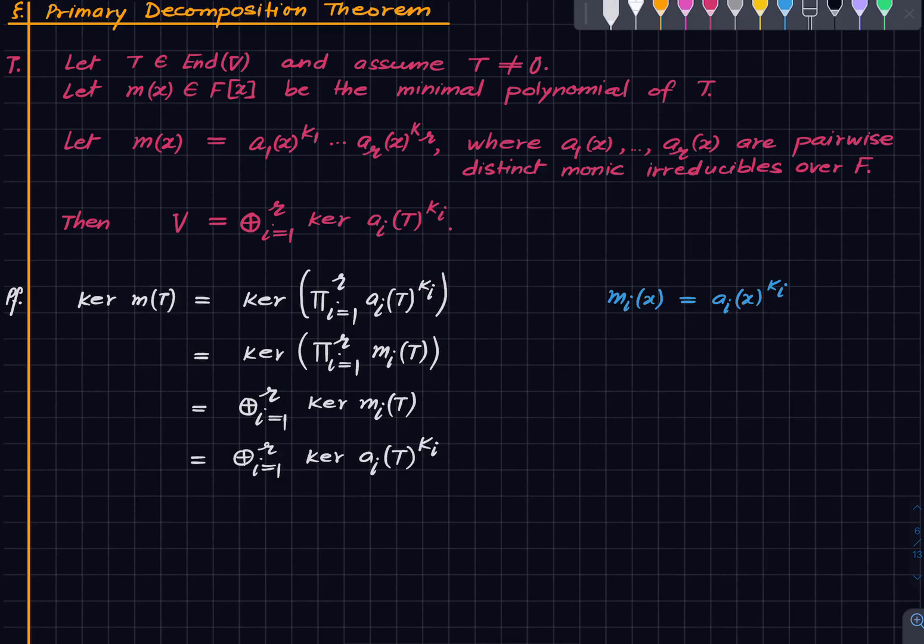And what is kernel of m(T)? What is this thing? Since m(x) is the minimal polynomial, m(T) kills everything, and hence this is just the vector space V. So that's it. V is the direct sum of these kernels, and that is the primary decomposition theorem.